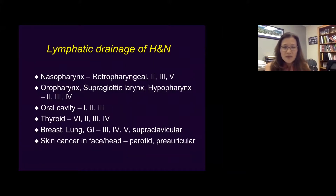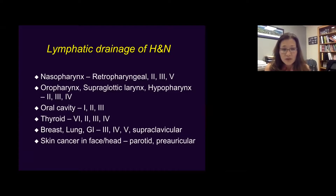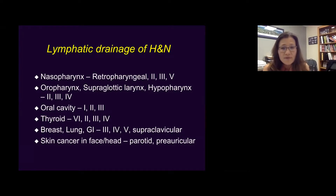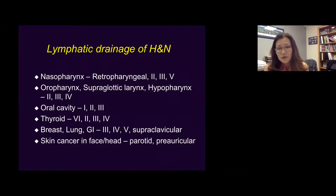To summarize the lymphatic drainage of head and neck cancer: nasopharyngeal cancer goes to retropharyngeal lymph nodes and levels 2, 3, and 5. Oropharyngeal, supraglottic larynx, and hypopharyngeal cancer go to levels 2, 3, and 4 in the internal jugular vein zone. Oral cavity cancer tends to be more anterior, going to levels 1, 2, and 3. Thyroid cancer involves levels 2, 3, 4, and also level 6 — the central compartment. When you see lower lymph nodes like levels 3, 4, and 5 without a clear head and neck primary, think about systemic cancer such as breast, lung, GI, or GU tract. When you have a lesion involving the skin and face or scalp, think about intraparotid or preauricular lymph nodes.